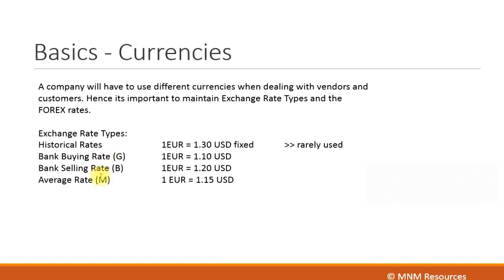The other three commonly used exchange rate types are bank buying rate and bank selling rate. When you try to go abroad, you would want to buy a currency from a bank, and there will always be a difference between the buying rate and the selling rate. When you purchase a currency from a bank it will be the bank's selling rate, and when you are giving your foreign currency to the bank it will be the bank's buying rate.